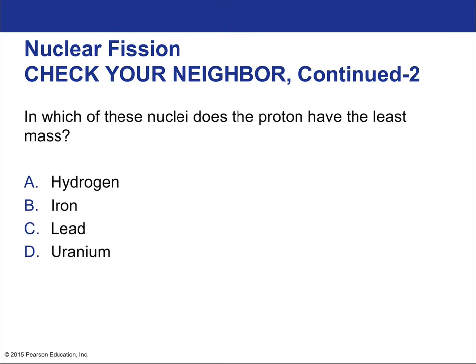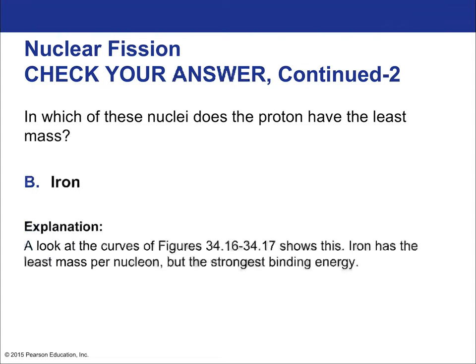In which nuclide does the proton have the least mass? This is the bottom of the binding energy valley — a special element well known in astronomy because all stars end up with a lot of this leftover material as they undergo fusion. That leftover core can collapse into a neutron star or a black hole. That special element is iron.